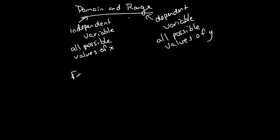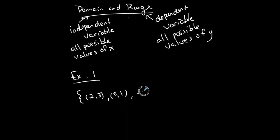We'll start easy. Example 1: we'll just have a list of ordered pairs — (2,3), (0,1), (-3,2), (4,6). Because this is a limited amount of points — only 4 points — I can actually list the values that go into my domain and list the values that go into my range.